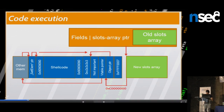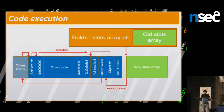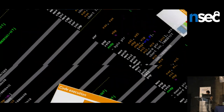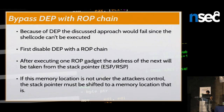This attack has one problem — it only works against very old operating systems like Windows XP. On newer systems, data execution prevention is present, meaning I cannot execute shellcode stored on the heap as it would cause a segfault. So the next step is to develop a ROP chain to disable DEP first.